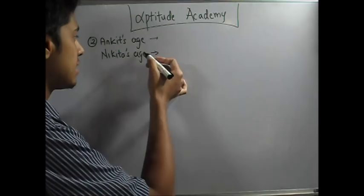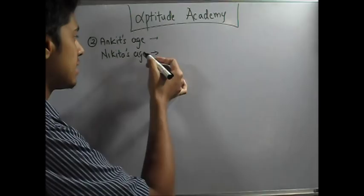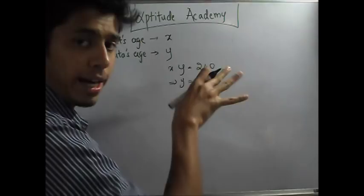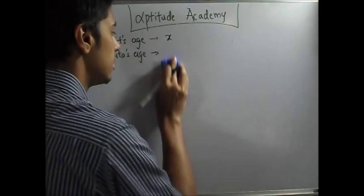Let Ankit's age be x and Nikita's age be y. They've said that x times y equals 240. Now you can see that y is actually equal to 240 divided by x. So let's simplify and replace y by 240 by x, eliminating one variable. So Nikita's age will be 240 by x.